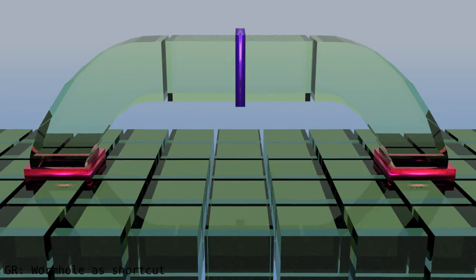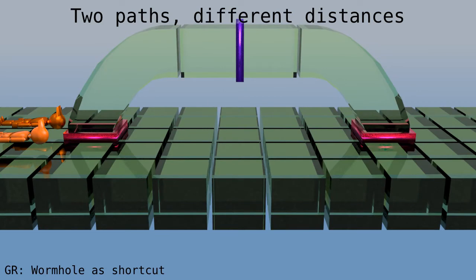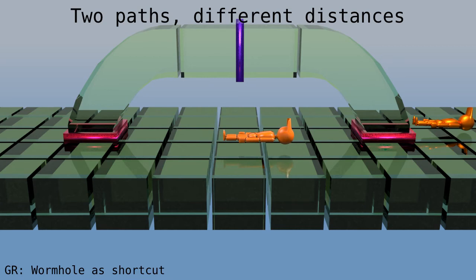The wormhole is a shortcut. Here we have two people that travel at the same speed, the same distance as measured by our sticks. The path through the wormhole is shorter and therefore quicker.